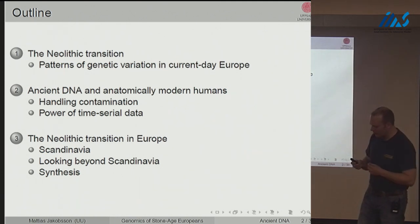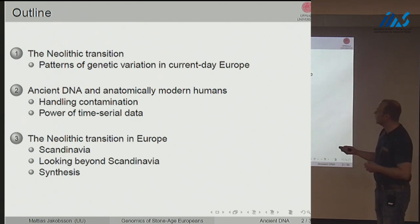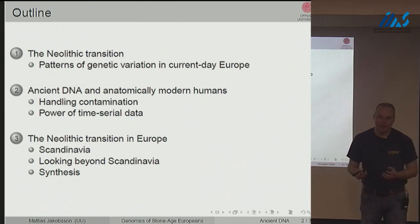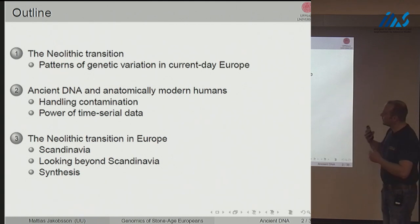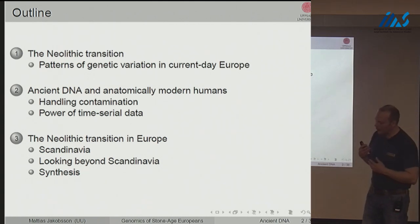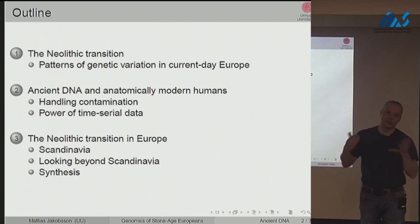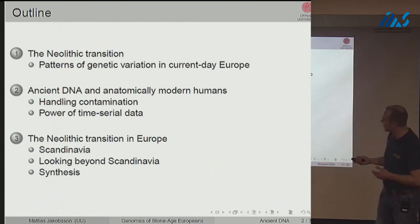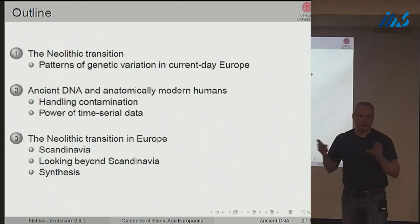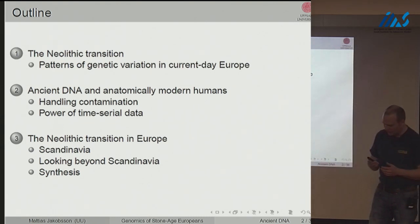There's going to be a lot of focus on Scandinavia, and you'll have to bear with me on that. DNA preserves quite well in Scandinavia because it's cold. I'll argue that the patterns we're seeing in Scandinavia are actually general for at least the European continent, probably for many of these types of transitions. I'll extend the idea beyond Scandinavia towards the end, then try to summarize everything in one slide.